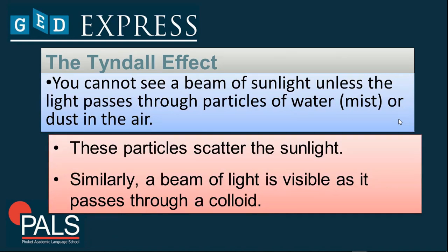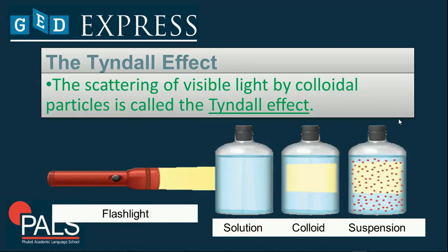The Tyndall effect is basically the phenomenon where you cannot see a beam of sunlight unless the light passes through particles of water, such as mist or dust in the air. These particles scatter the sunlight. Similarly, a beam of light is visible as it passes through a colloid. For example, imagine a flashlight shining through containers holding a solution, a colloid, and a suspension.